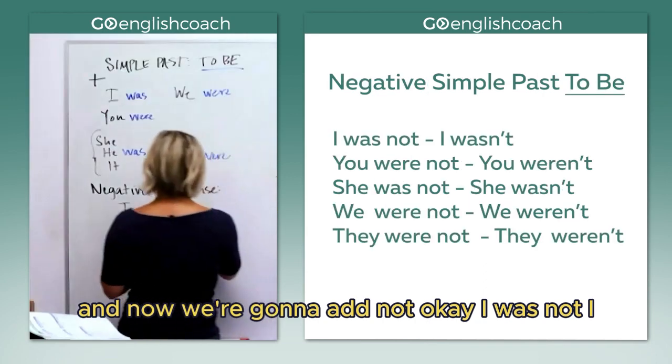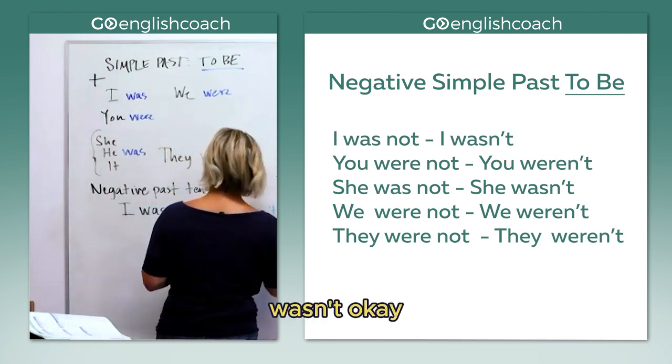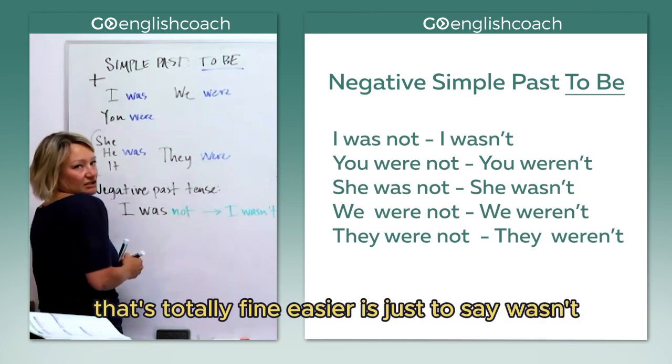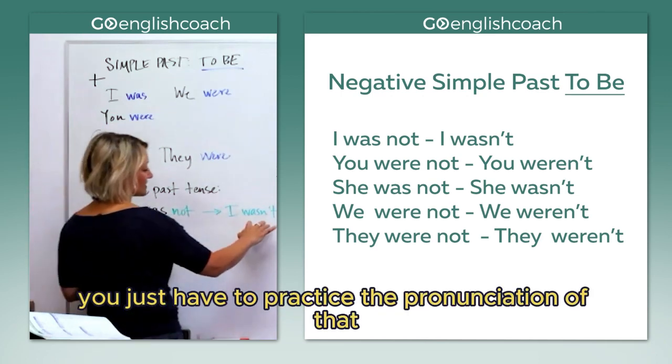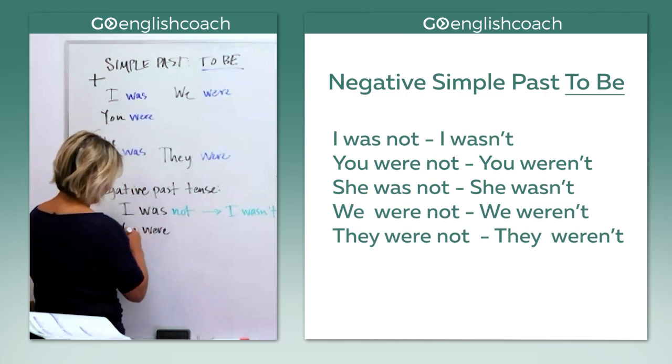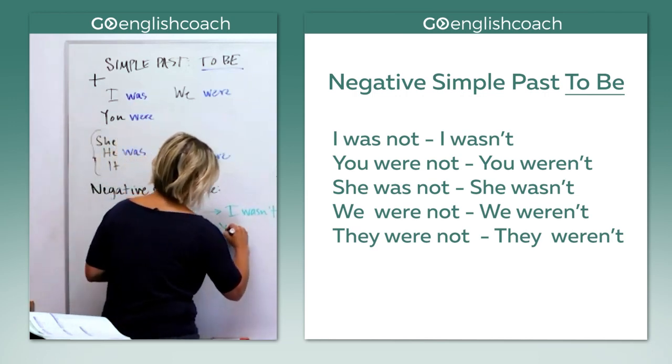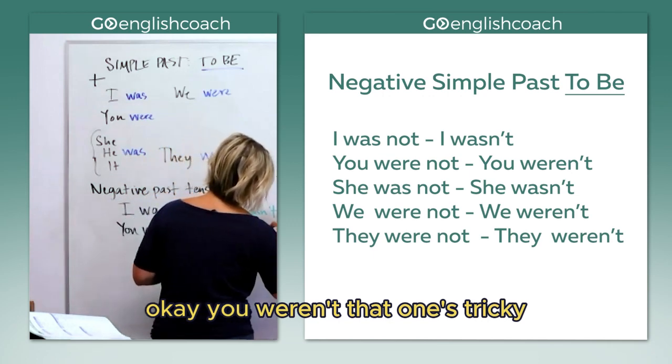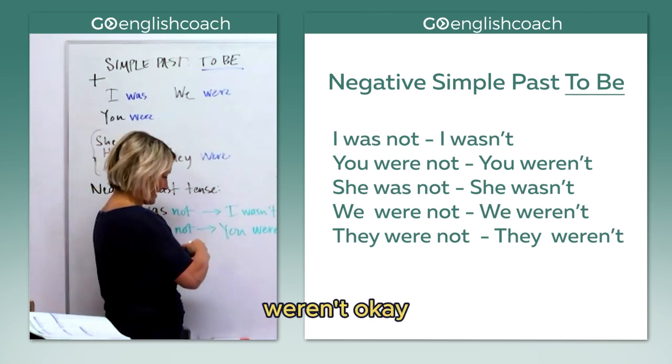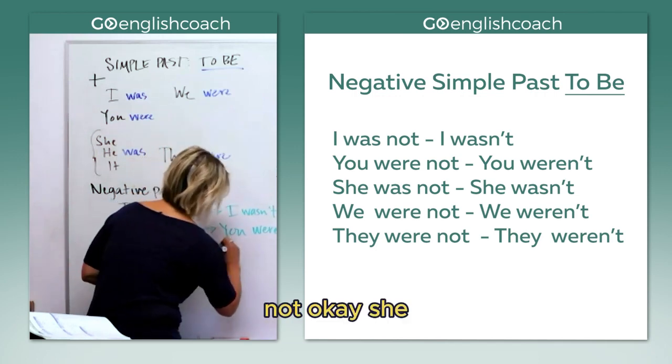I was not - I wasn't. You can say 'was not', that's totally fine, easier is just to say 'wasn't', you just have to practice the pronunciation of that. You were not - you weren't. That one's tricky, practice that one a little bit: weren't, weren't. She was not - she wasn't.